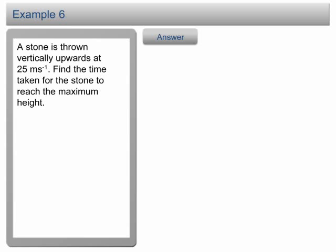Example 6. A stone is thrown vertically upwards at 25 m per second. Find the time taken for the stone to reach the maximum height. Click on the answer button to proceed.